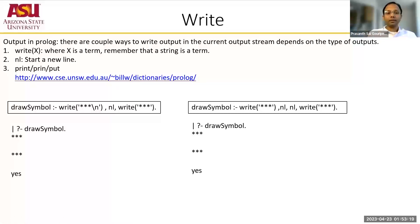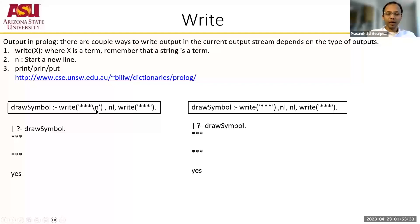Write can take x as a term. A term can be a string, an integer, or a character. So let's see how this line is written. When you call draw_symbol, write three stars followed by '\n' puts three stars and a newline character. nl is the symbol for new line in Prolog, and again another three stars.